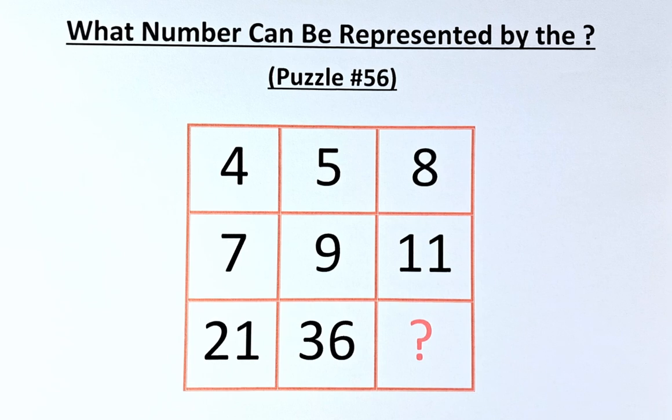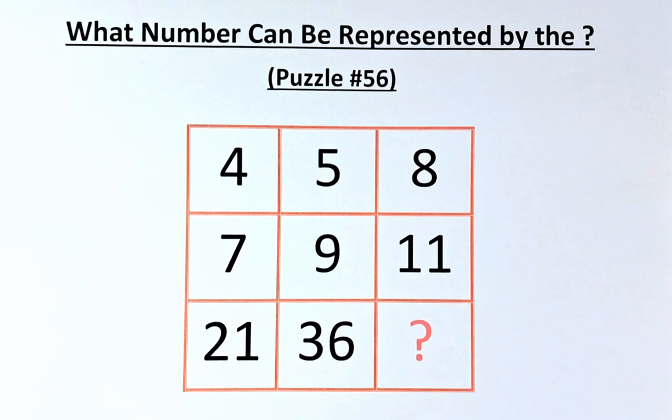In the second row, we have 7, 9, and 11. And in the final row, we have 21, 36, and the question mark.